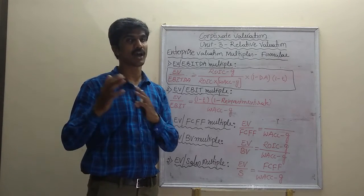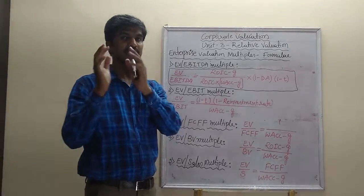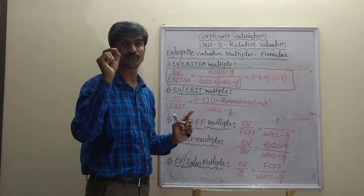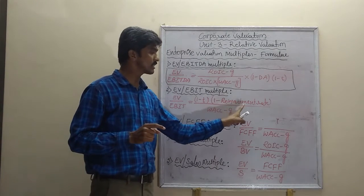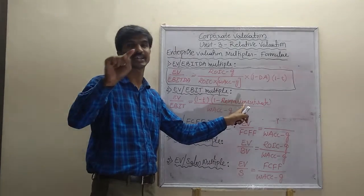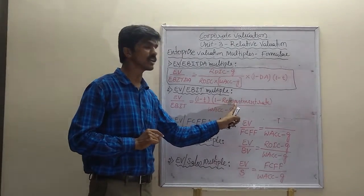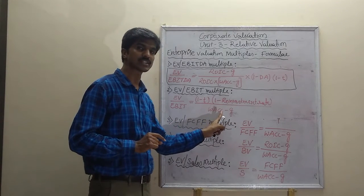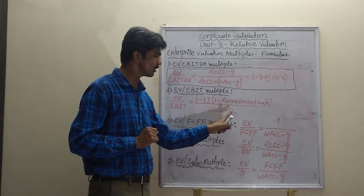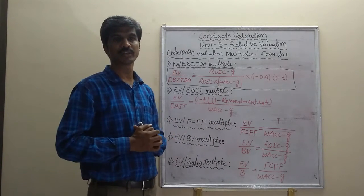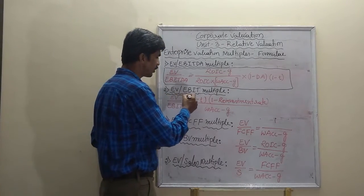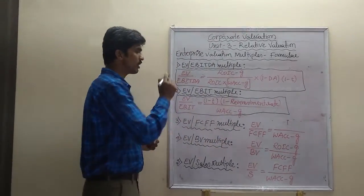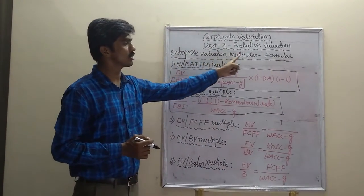whatever the payout and dividend retention is there, that retention amount will be reinvested in the company. The rate of return the company is promising on the dividend retained is the reinvestment rate. WACC stands for weighted average cost of capital, and G stands for growth rate in dividends. So this is the formula we use in calculating EV to EBIT multiple under enterprise valuation multiples.